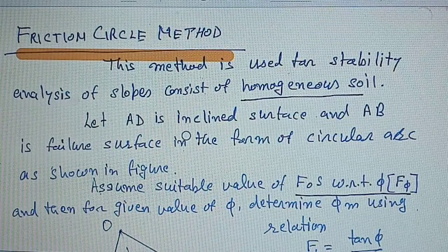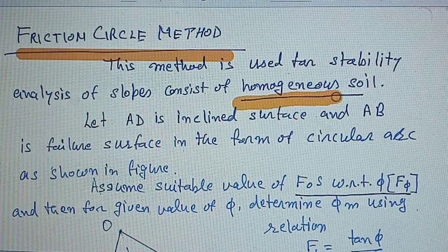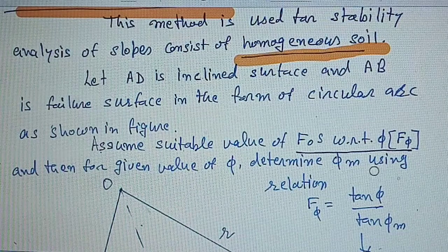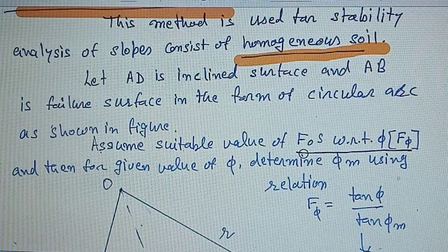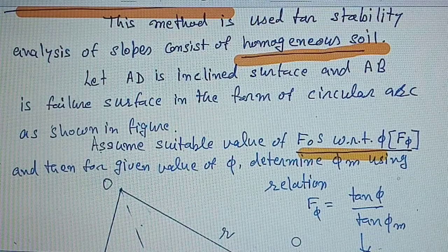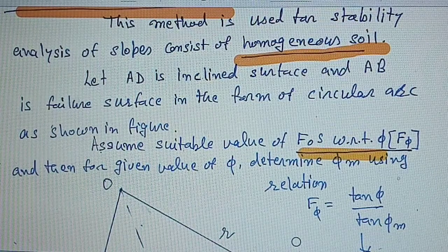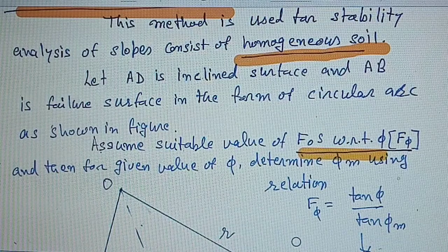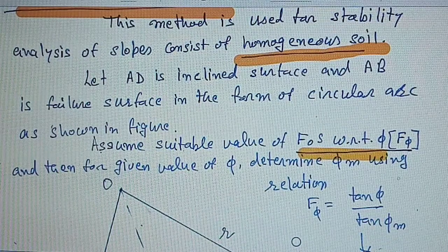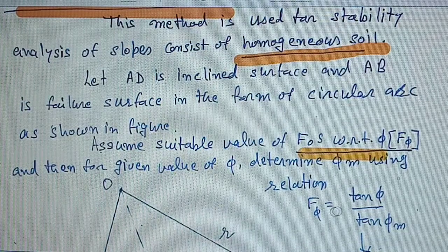This method is used for stability analysis of slopes consisting of homogeneous soil. In this method, we assume the factor of safety with respect to phi and then determine the factor of safety with respect to cohesion. If both values are equal, then the analysis is complete. If these values are not equal, then repeat the procedure by taking another suitable value of phi.